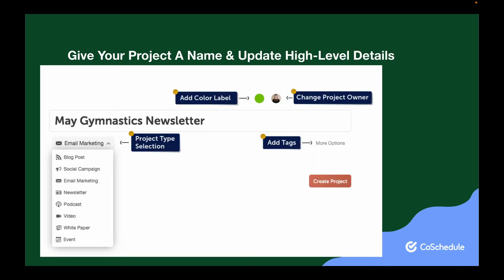Next, you'll want to update the other project card details so you can see the big picture of what you're working on and what's coming next at a glance. First, you'll want to choose a project type. This helps you understand the kind of content you'll create without having to click into the project for more details.